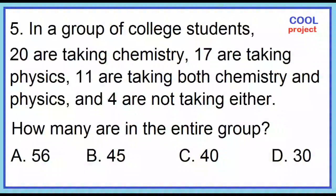Number 5. In a group of college students, 20 are taking Chemistry, 17 are taking Physics, 11 are taking both Chemistry and Physics, and 4 are not taking either. How many are in the entire group?